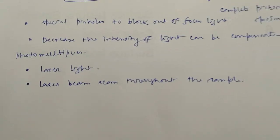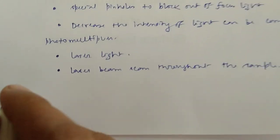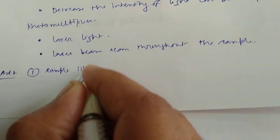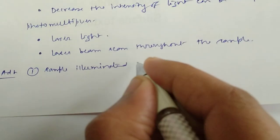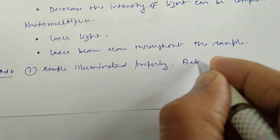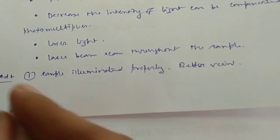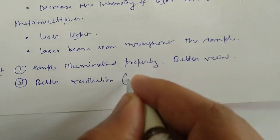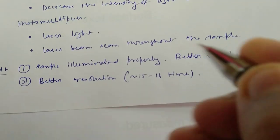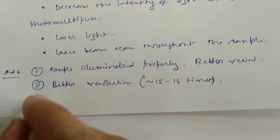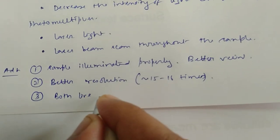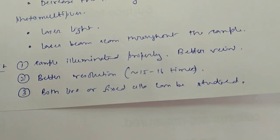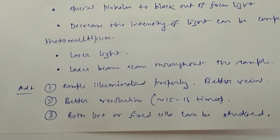Advantages of confocal microscopy: first, the entire sample will be properly illuminated, giving a better view than fluorescence microscopy. Second, better resolution — about 15 to 16 times more than fluorescence microscopy. Third, both live and fixed cells can be studied.